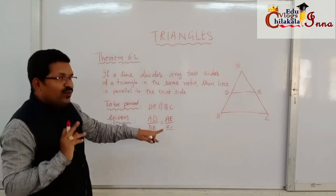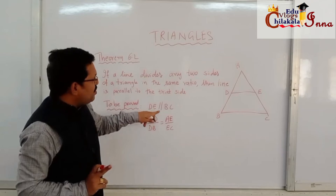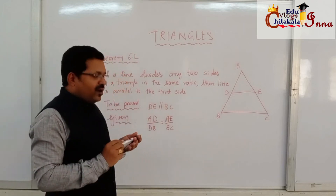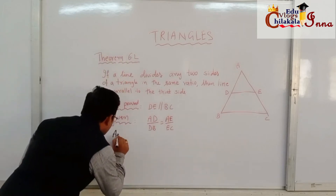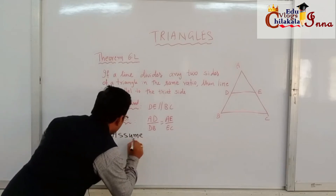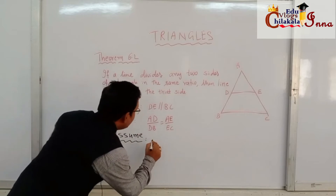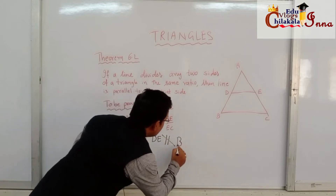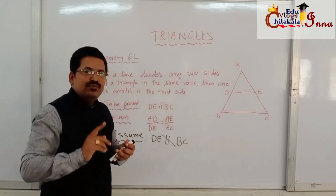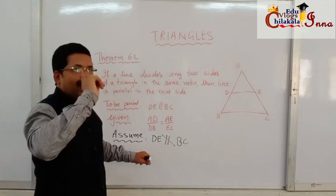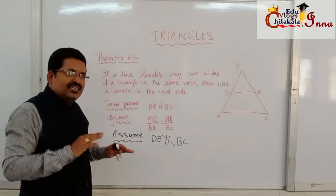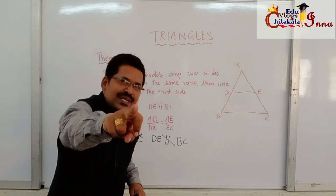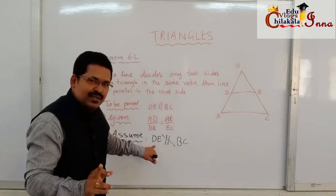If this is given, we have to prove that DE is parallel to BC. For this, we shall make an assumption. Let us assume that DE is NOT parallel to BC.